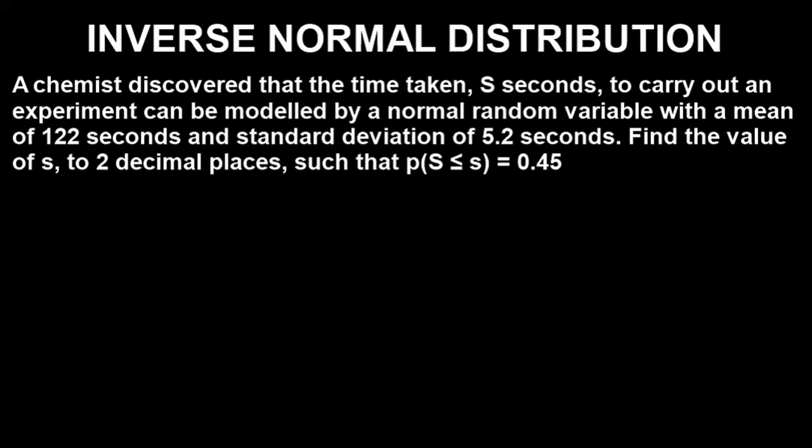Before we get to the calculator details, let's quickly look at the question we're going to solve together. A chemist discovered that the time taken, S seconds, to carry out an experiment can be modeled by a normal random variable with a mean of 122 seconds and standard deviation of 5.2 seconds. Find the value of S to two decimal places such that P(S ≤ s) = 0.45.